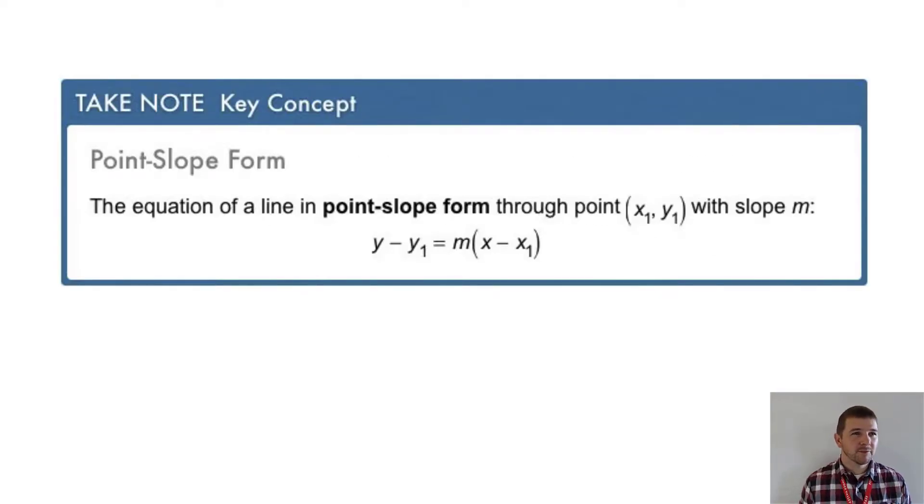Take note, key concept: point-slope form. The equation of a line in point-slope form through the point (x₁, y₁) with slope m can be written y - y₁ (note that's the point from our coordinate, the y value) equals m, our slope, times in parentheses (x - x₁). And again, x₁ coming from our point (x₁, y₁).